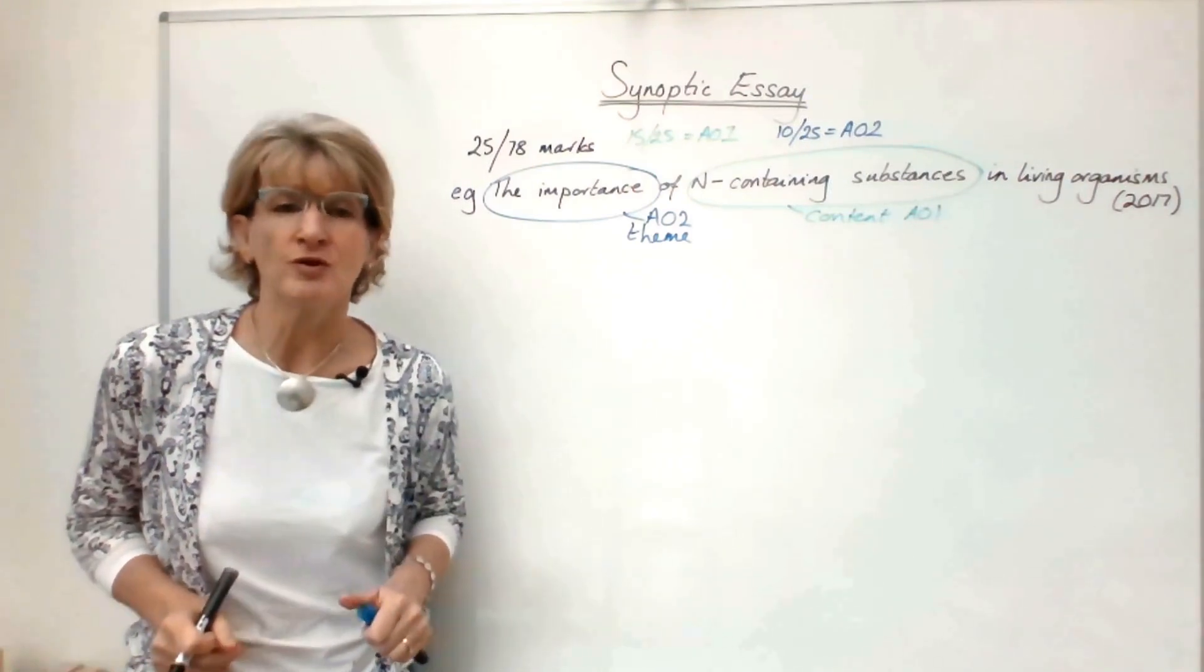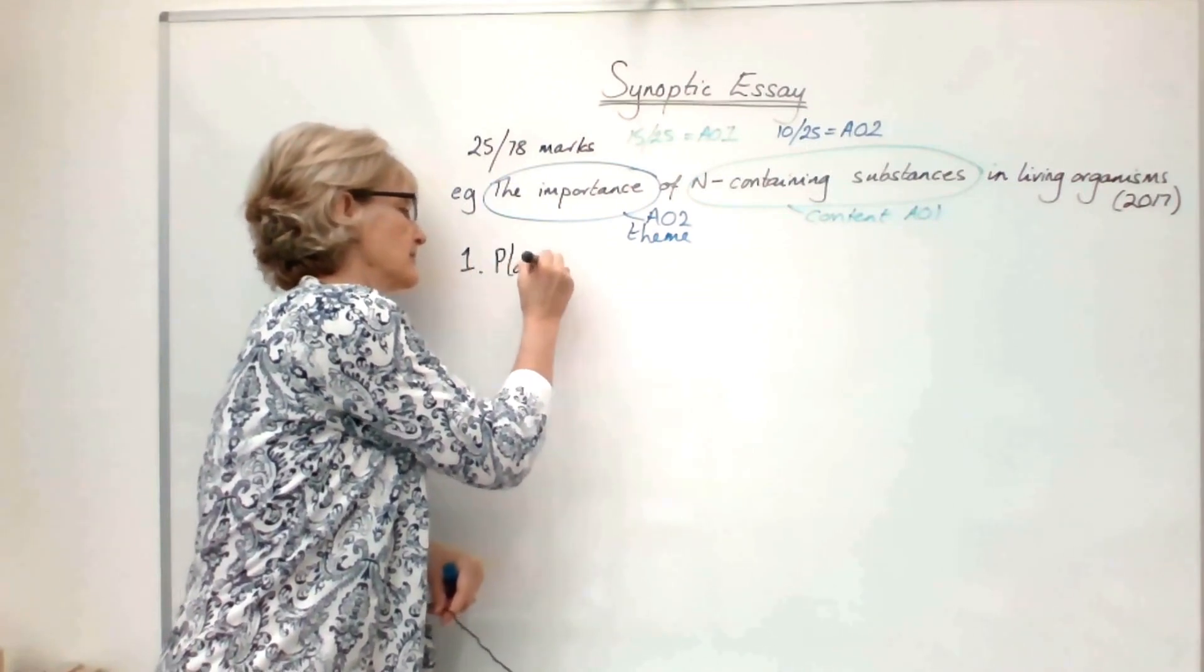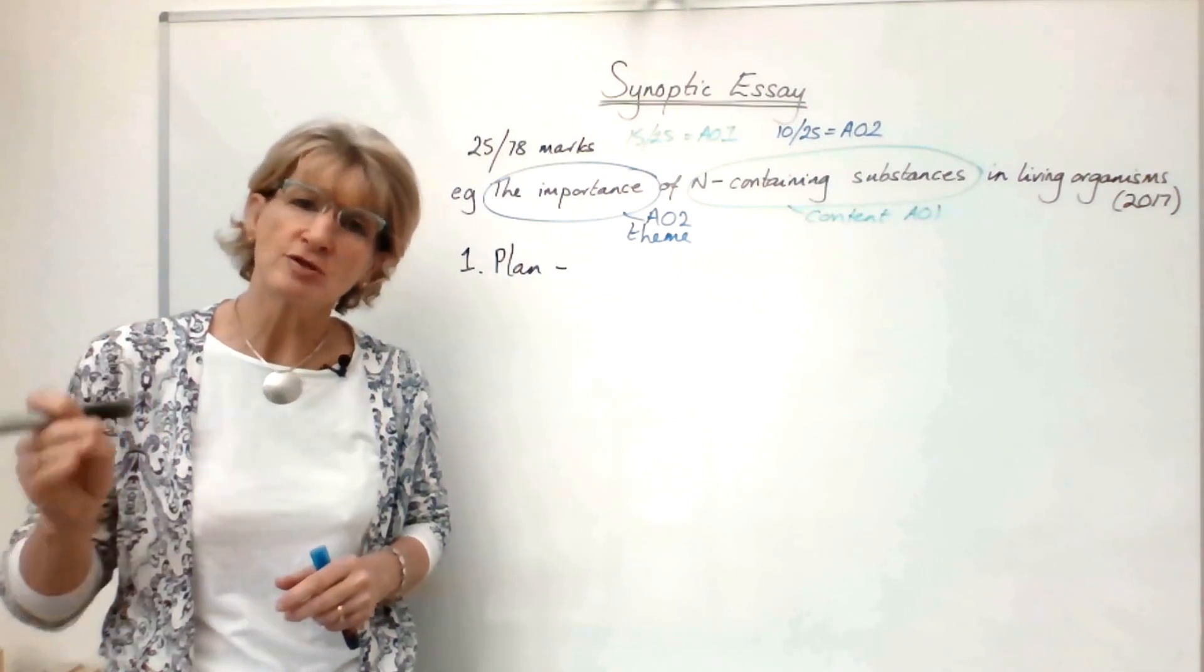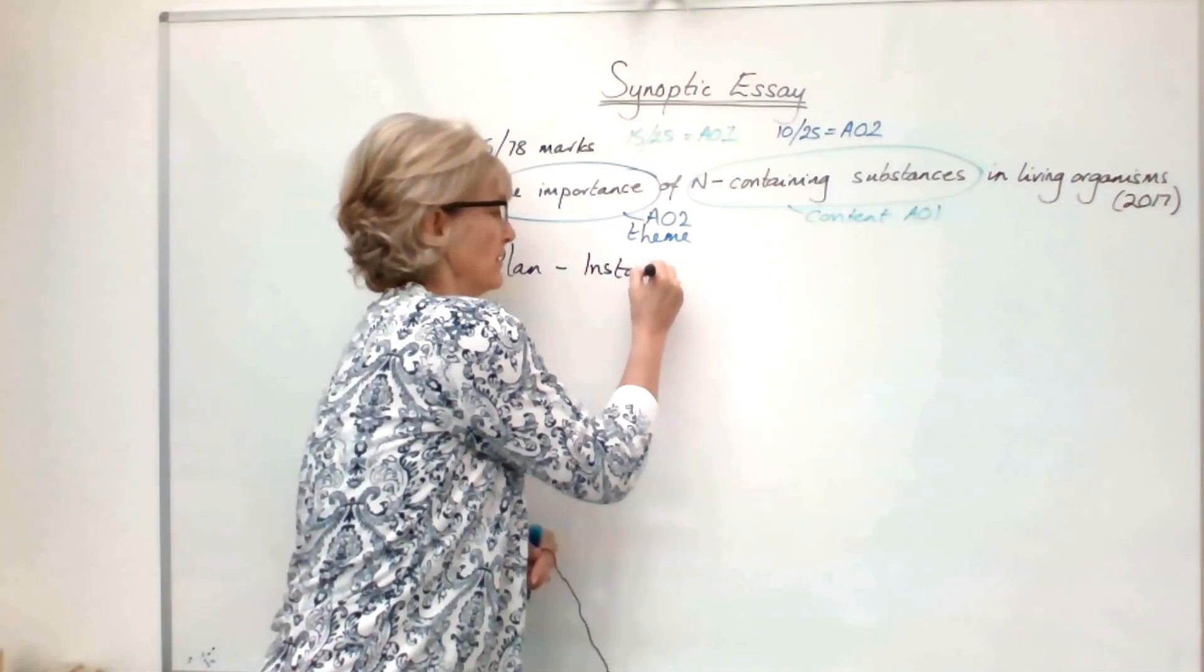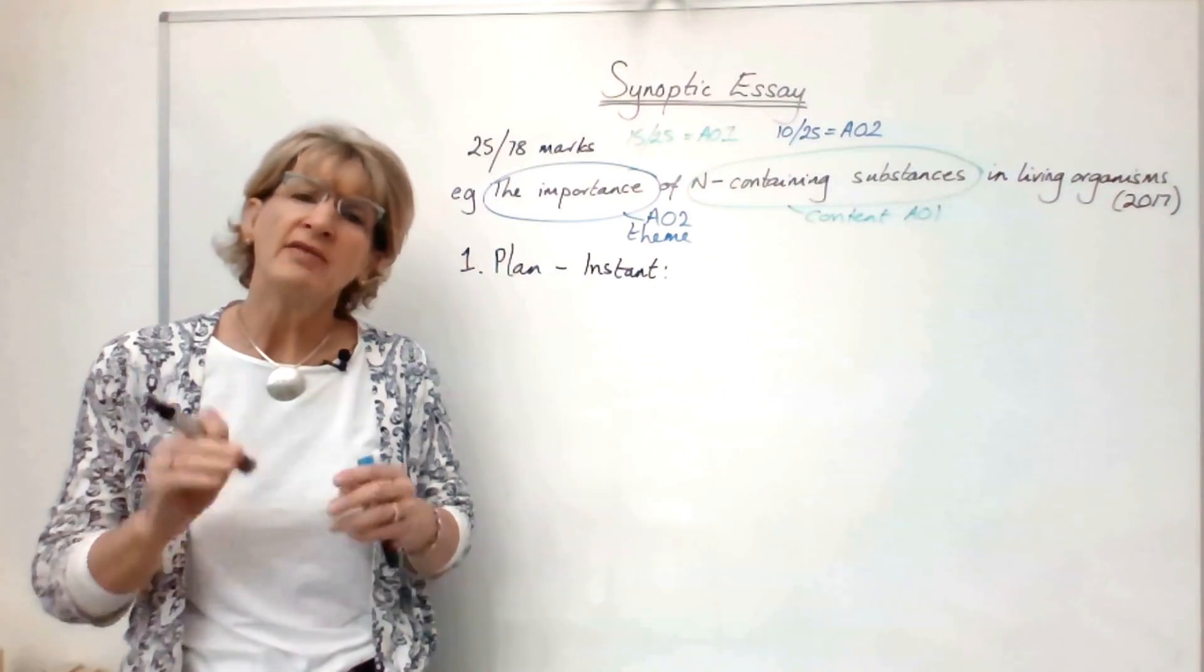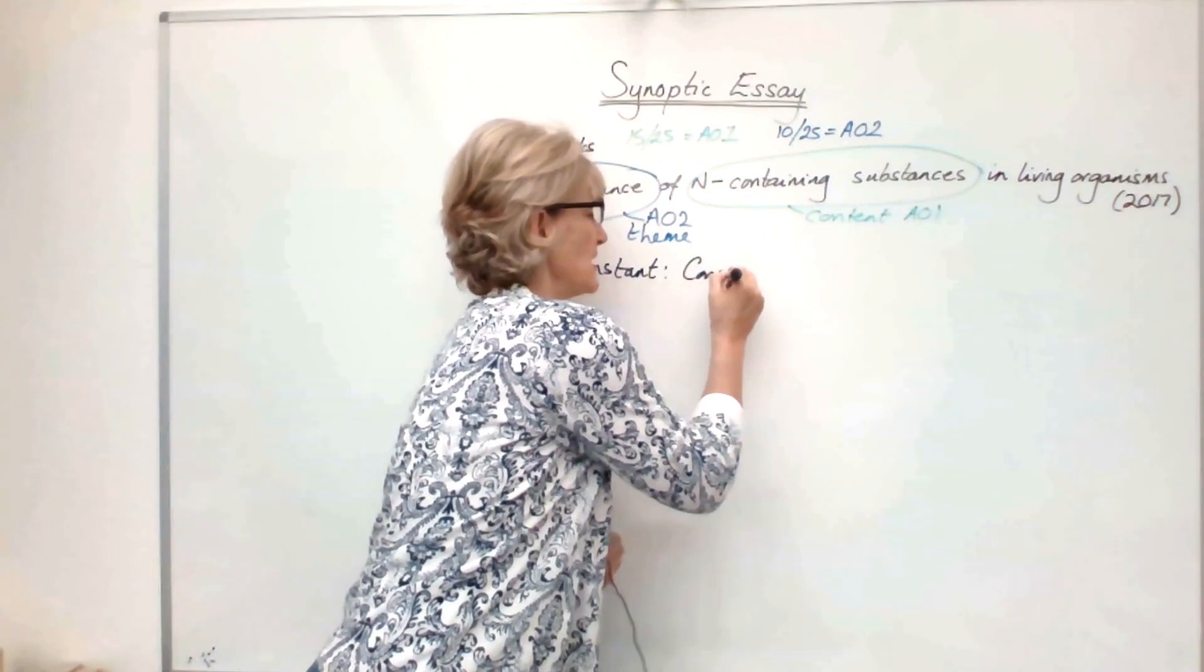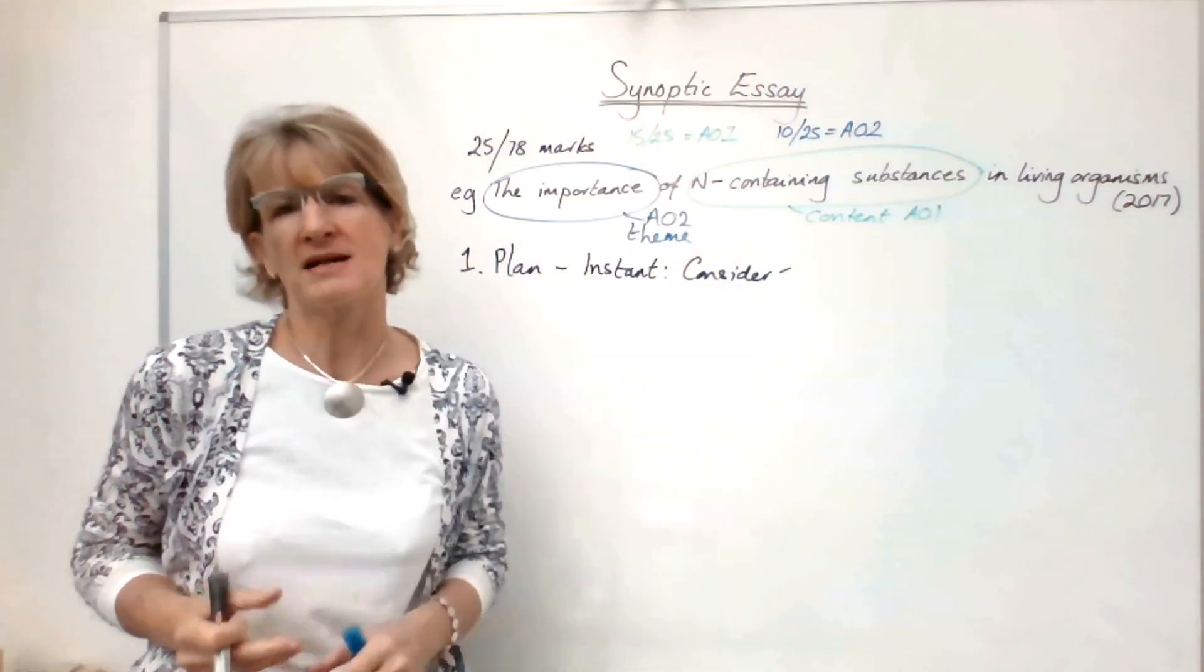Tips for your Synoptic Essay. Tip number one is plan, and planning on two levels. The first thing you should do when you open your paper 3 is go straight to the back and look at the Synoptic Essay titles and do an instant plan right at the beginning of the exam, probably only two or three minutes. That is so you consider both of the essay titles, which is really quite important.